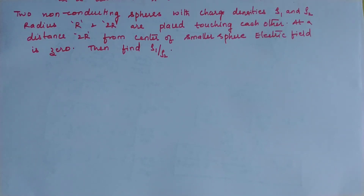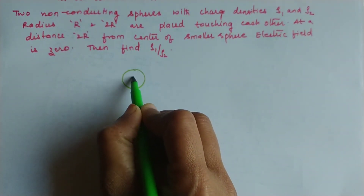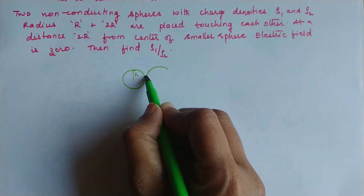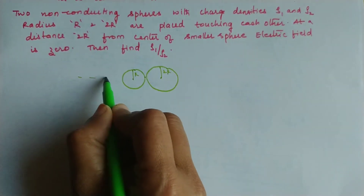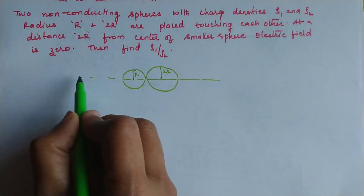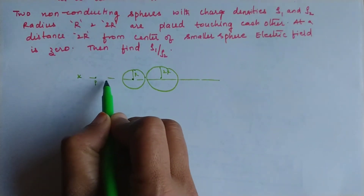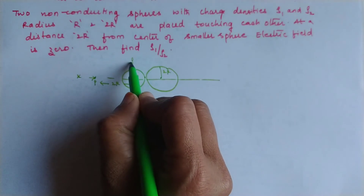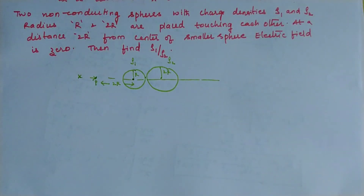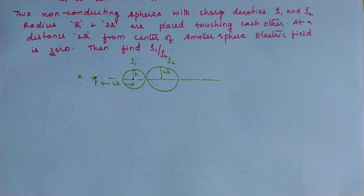In the final question, two non-conducting spheres with volume charge densities rho₁ and rho₂ have radii R and 2R respectively and are touching each other. Along the line joining their centers, at a distance 2R from the center of the smaller sphere (which places the point outside both spheres), the electric field is zero. We need to find the ratio rho₁/rho₂.